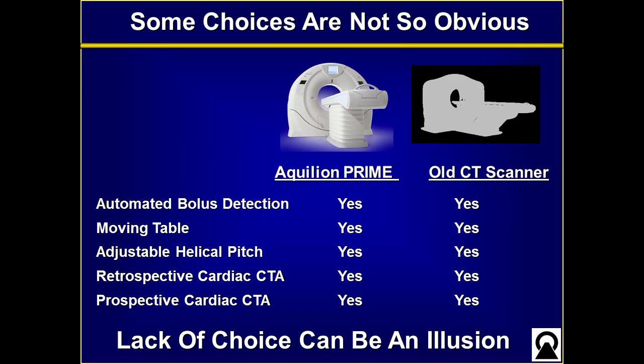What I'd like to spend the rest of my talk on are choices that are not so obvious — ones I didn't even consider when thinking about upgrading my scanner. They revolve around things where you think you know everything already. For instance, both our new scanner and our old scanner have automated bolus detection, they both have a table that moves, they can both adjust the helical pitch, and you can choose whether to do cardiac CT prospectively or retrospectively. It's the apparent lack of choice that can be an illusion, and the problem is choice.